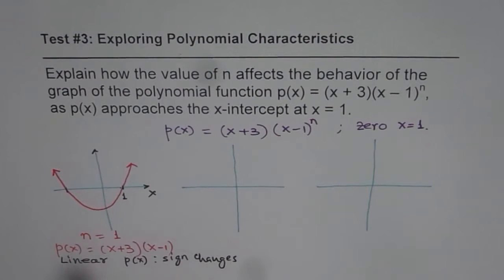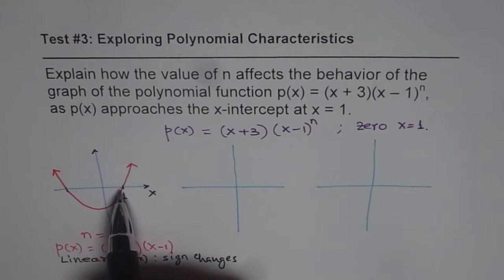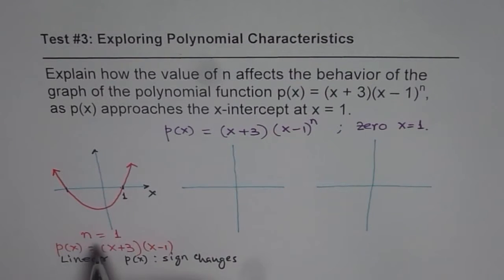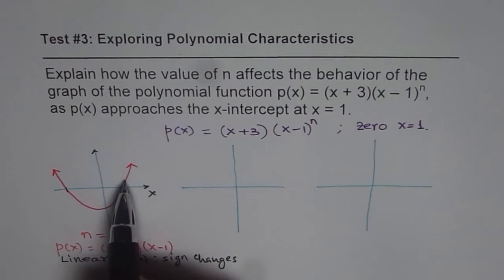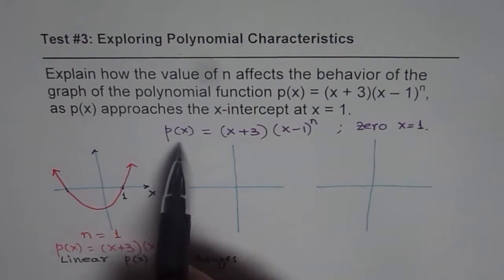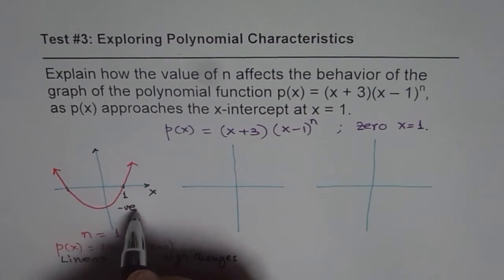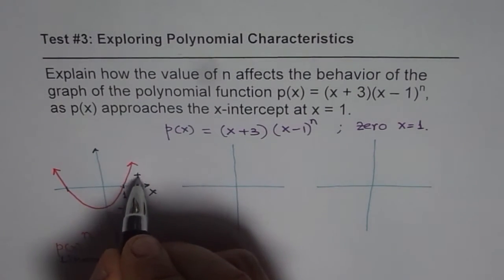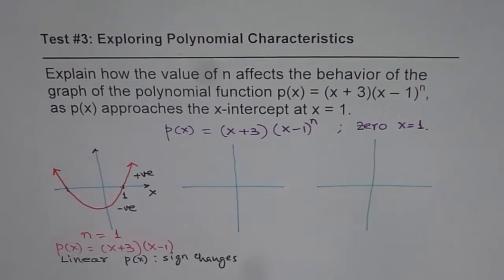You have to mention two things. First, how the graph crosses the x-intercept — it crosses like a straight line. Second, when it crosses, the value of the polynomial changes from negative to positive. These are the two things you should mention to get full marks.